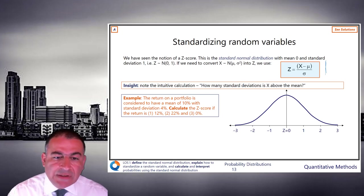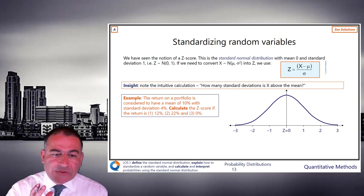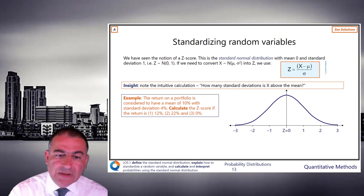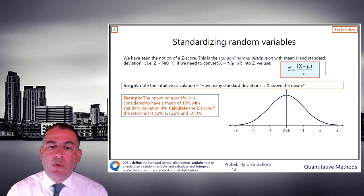The return on a portfolio is considered to have a mean of 10% with standard deviation of 4%. Calculate the z-score if the return is 12, 22, or 0%.